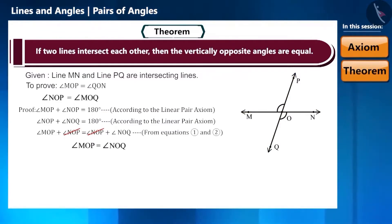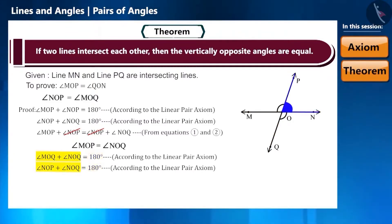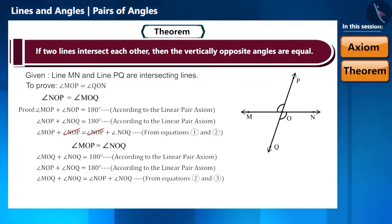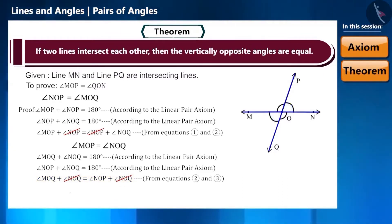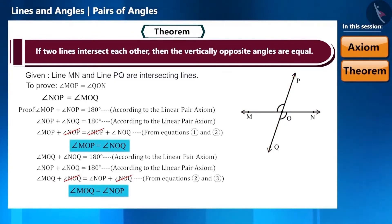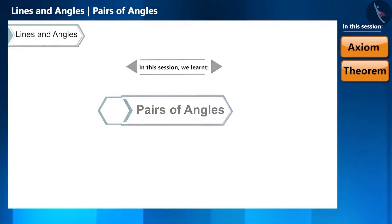Similarly, keeping ray OQ in mind: angle MOQ plus angle NOQ equals 180 degrees. And taking ON as a ray: angle NOP plus angle NOQ equals 180 degrees. With both right-hand sides equal, cancelling angle NOQ from both sides gives angle MOQ equals angle NOP. So we proved that vertically opposite angles formed by the intersection of two lines are equal. In the next video we will solve some questions based on this topic.